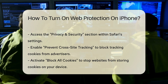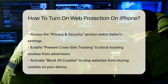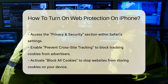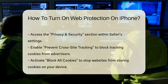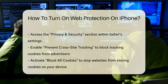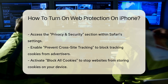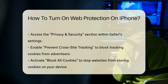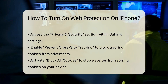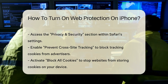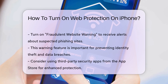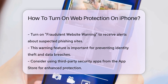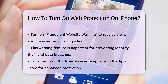In the Privacy and Security menu, you will find features like Prevent Cross-Site Tracking. Enabling this option helps block tracking cookies from advertisers, enhancing your privacy. Additionally, activate Block All Cookies to prevent websites from storing cookies on your device. This adds another layer of security.